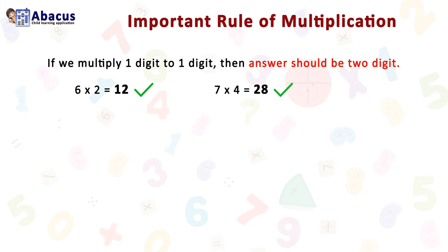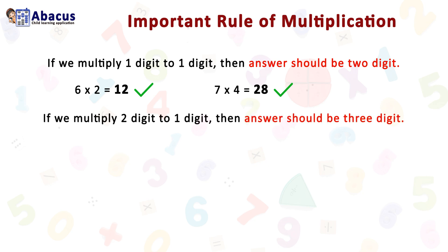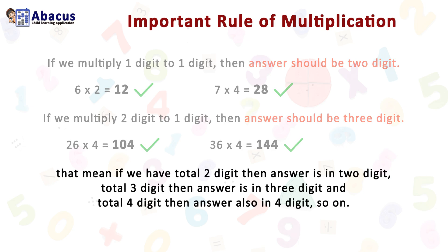If we multiply two digits by one digit, the answer should be in three digits. For example, 26 multiplied by 4 equals 104 — here 104 is three digits. Similarly, 36 multiplied by 4 equals 144 — here 144 is also three digits.